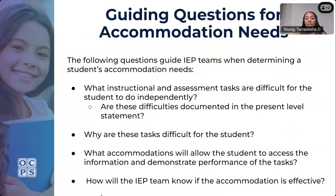The following questions guide IEP teams when determining a student's accommodation needs: What instructional and assessment tasks are difficult for the student to do independently? Are these difficulties documented in the present level statement? Why are these tasks difficult? What accommodations will allow the student to access information and demonstrate performance? And how will the IEP team know if the accommodation is effective? These apply not just for testing but also for everyday classroom instruction.